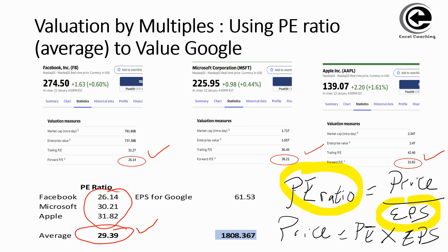Going back to the PE ratio relationship — we now know the average industry PE ratio is 29.39, and we know the earnings guidance for Google is $61.53. The price is therefore the PE ratio multiplied by the earnings per share: 29.39 multiplied by 61.53 arrives at approximately $1,800. So $1,800 is the theoretical price of Google, based on a PE ratio using the average of three comparable companies and Google's earnings per share forecast.